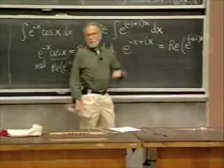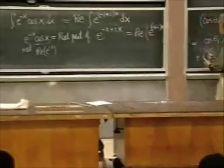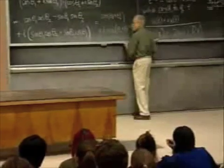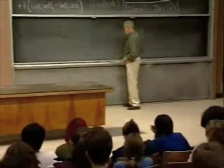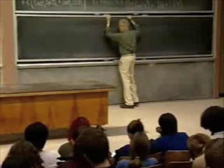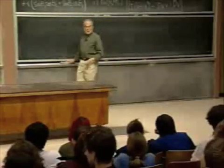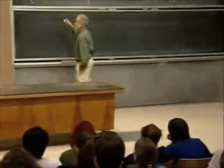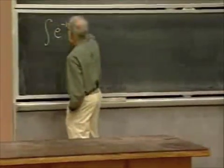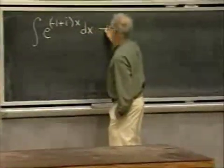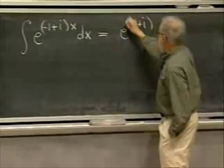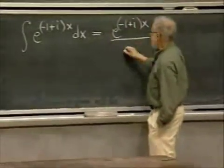Nothing is easier to integrate than an exponential. And though you may have some doubts as to whether the familiar laws work also with complex exponentials, I assure you they all do. It would be lovely to sit and prove them, but after a while you'd find it rather dull. So I'm going to do the fun things and assume they're true, because they are. So what's the integral of e to the minus one plus i, times x, dx? Well, if there is justice in heaven, it must be e to the minus one plus i, times x, divided by minus one plus i.